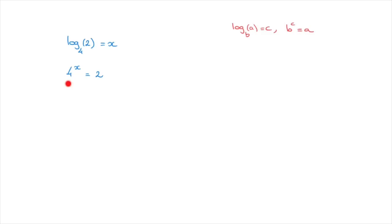The key thing to notice here is that 4 is equal to 2 to the power of 2. Indeed, we have 4, which equals to 2 to the power of 2. So using that fact, we can rewrite the left-hand side as 2 to the power of 2, all of which is raised to the power of x.